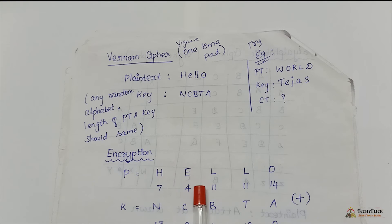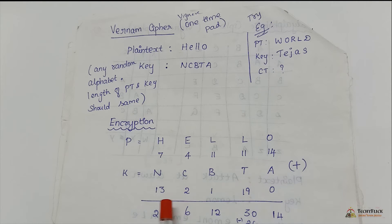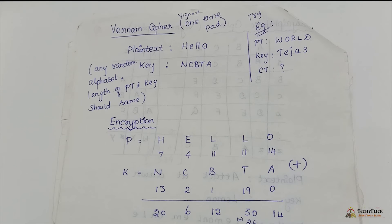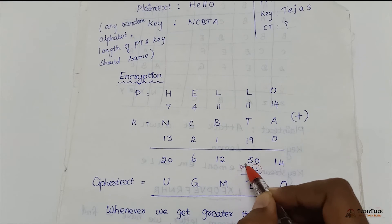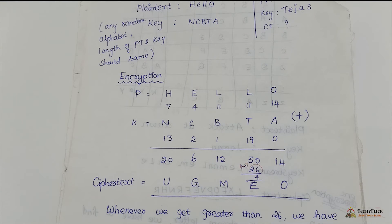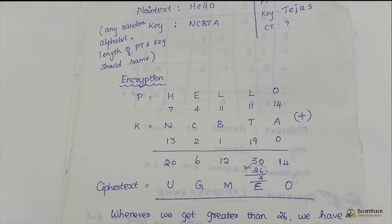For the encryption technique, we find the plain text 'hello' using A=0 to Z=25 numbering: H=7, E=4, L=11, L=11, O=14. The key 'NCBT' gives values 13, 2, 1, 19. We add the plain text and key values: 20, 6, 12, 30, 14. Wherever the result is greater than 26, we subtract 26 — so 30 becomes 4. The corresponding letters give us the cipher text: U, G, M, E, O.